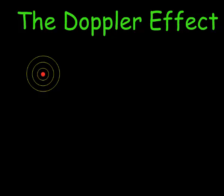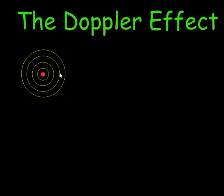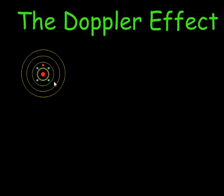After one more second, we have our first wavefront now at this position. The second wavefront is this middle one, and the third wavefront, emitted one second ago, is now there. The fourth one is being emitted right now. So after four seconds, our first wavefront is the one furthest away from the source. Please take note that this source is not moving — it's a stationary source.